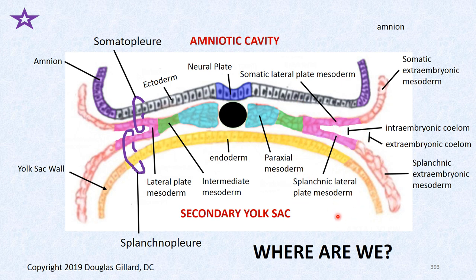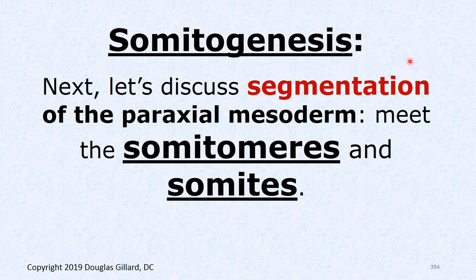So we're going to talk about somitogenesis — the segmentation of the paraxial mesoderm into epithelial blocks. That's where we're going.